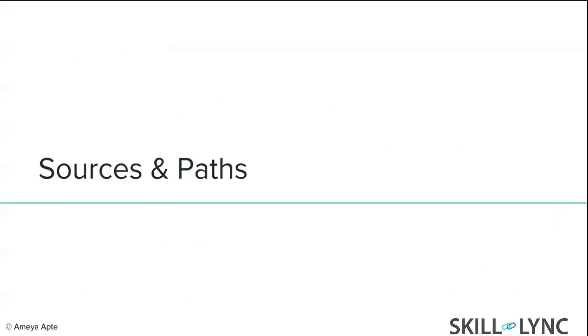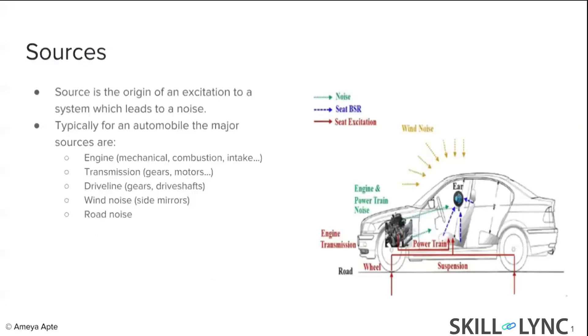So after looking at some theory here, let's look at some sources and some application point of view of the topic. Let's just talk about some sources that we have. Sources are basically excitation that we put in our system, which leads to a noise or vibration. The typical sources of noise in an automotive application I have listed down here. Just to take a quick example of the engine in this case, to list out how many sources we have in there.